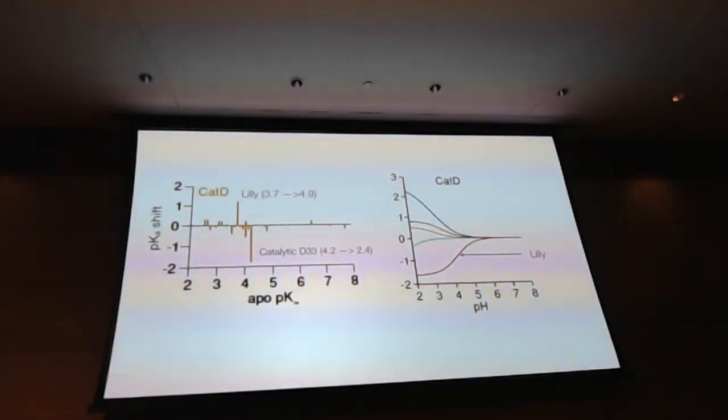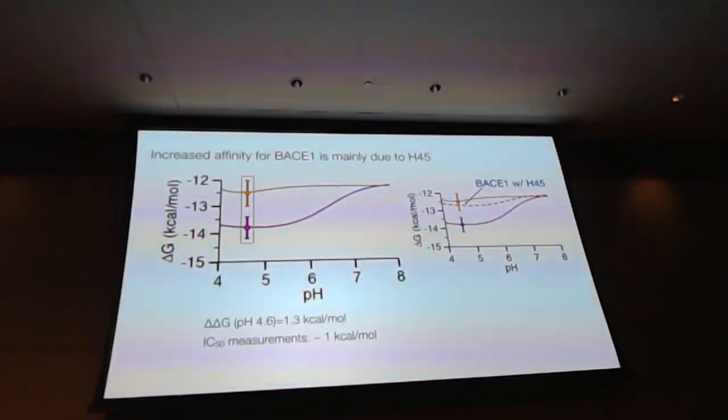All right. So now we're going to look at cathepsin D. For cathepsin D, we also have only a handful of residues that contribute. And the largest contributor is not surprisingly that actually the inhibitor Lilly compound on the pyrimidine ring site, there is a pK shift of about 1.8 pH units. Oh, no. This is 3.7 to 4.9. So it's 1.2 pH unit. And for the catalytic site, aspartate, the pK shift is even larger. But it's not very relevant because it's in the lower pH range. If you add them together, it turns out they all cancel. So that's the life. Lots of error cancellations and a lot of pluses, minuses.